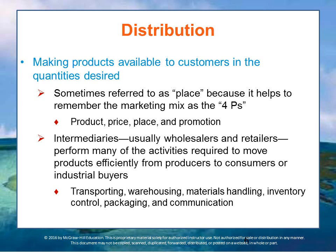Distribution — sometimes referred to as 'place,' making it the four P's — is the making of products available to customers in the quantity desired, where customers are located or able to take ownership of them. Intermediaries, usually wholesalers and retailers, perform activities required to move products efficiently from producers to consumers, involving transporting, warehousing, materials handling, inventory control, as well as packaging and communication.